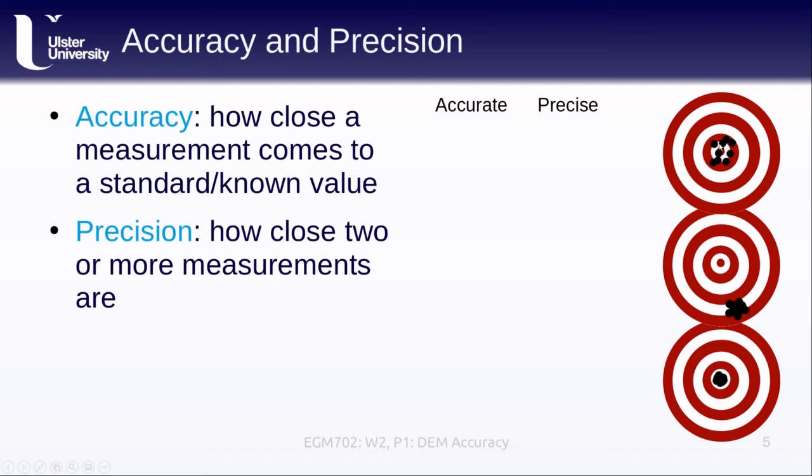If we look at our different targets here, we have some darts that we've thrown at the center, and we have some different clusterings of those throws. If we look at our first set of darts, you see that they all come fairly close to the center. They're fairly close to the target or the standard or known value that we're aiming for. So we would say that these are fairly accurate.